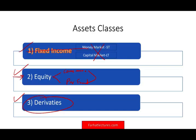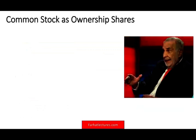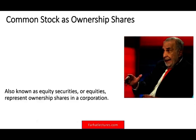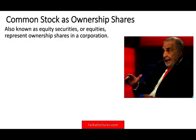It's very important that you understand the basics before you move on into intermediate and advanced topics. Common stocks are basically a form of ownership share. When you buy stocks in a company, you buy common stocks. They represent equity securities, or simply equities. Equity represents ownership shares in a corporation. When you buy a stock in Apple or Microsoft, you become an owner of the company.